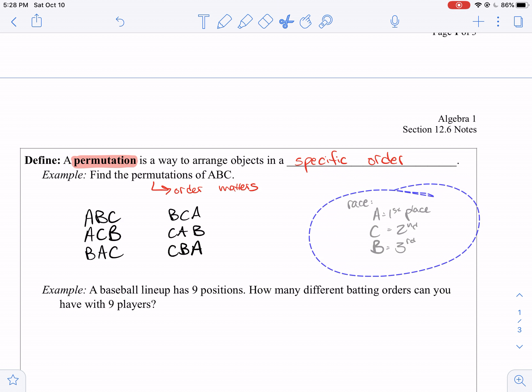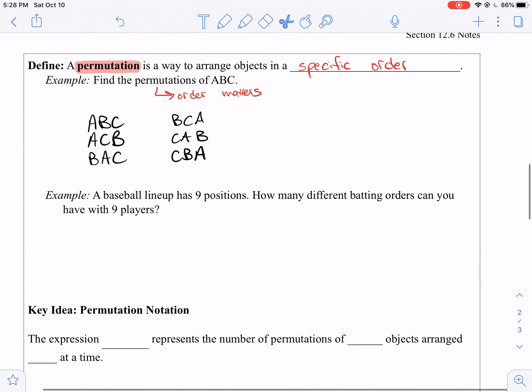So let's do an example. Let's say that we're playing baseball and you need to find different batting orders. So a baseball lineup has nine positions. We've got nine players. And you want to find out how many different batting orders you can have with nine players. We're going to calculate this in this way. So for our first position, we're going to have nine positions. So I'm going to lay out nine places. One, two, three, four, five, six, seven, eight, nine.